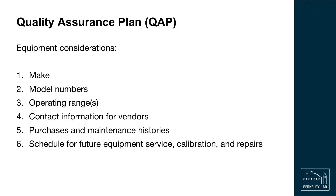When describing the equipment used in your laboratory, include make, model numbers, operating ranges, contact information for vendors, purchases and maintenance histories, and a schedule for future equipment service, calibration, and repairs. The quality assurance plan should be referenced and updated on a set schedule to ensure that all equipment is up to date on manufacturer recommended calibration.